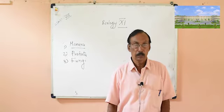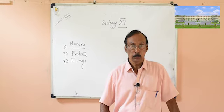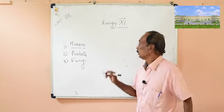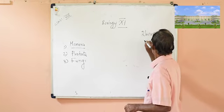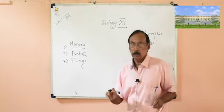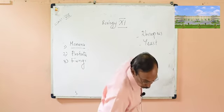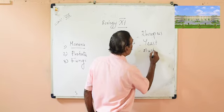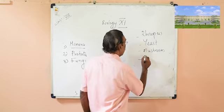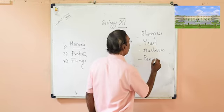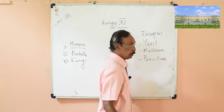Today we are going to discuss about Fungi. Many examples are familiar to you. Last year you studied about Rhizopus, or bread mold, which grows on bread. You are also very familiar with yeast, which is used for making bread and other things. Another very common one is the edible mushroom. Then there is Penicillium, another important fungus used for making the antibiotic penicillin. These are very common and useful types of fungi.